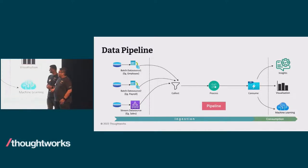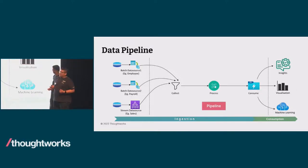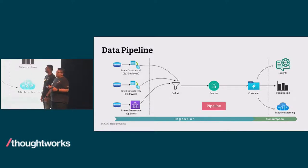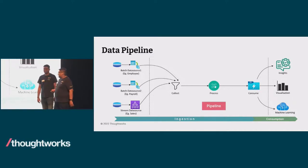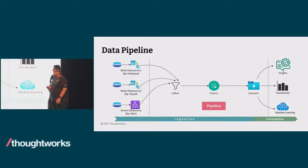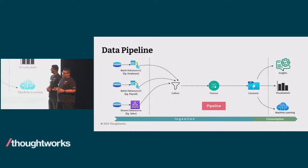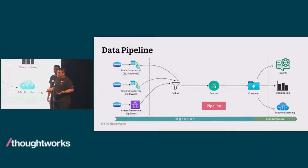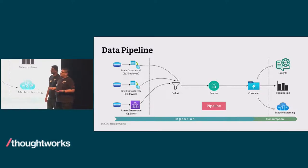In a data pipeline there will be three stages: the collect stage, which acts as an entry point for the data; the process stage, where data validation and transformation happens; and this data will be stored in the final layer for consumption. This sequencing of stages can also be referred to as an orchestration. Therefore, a data pipeline can be referred to as an orchestrated sequencing of stages.